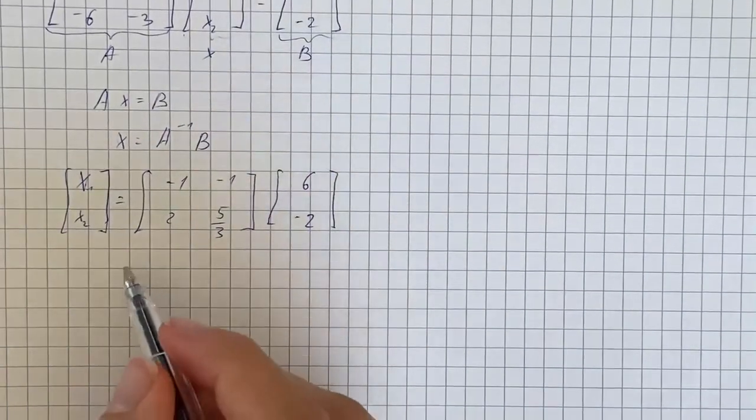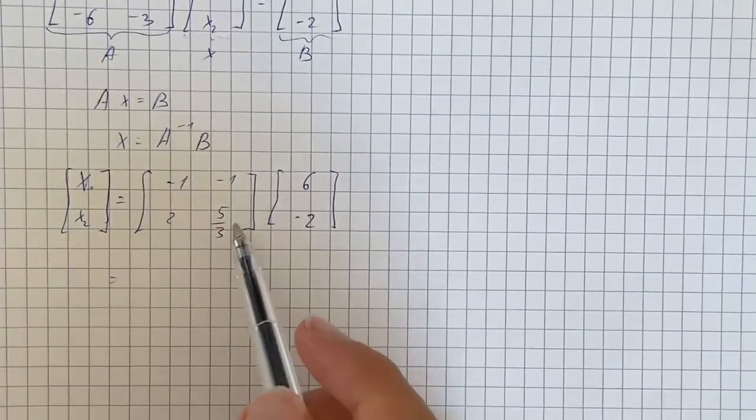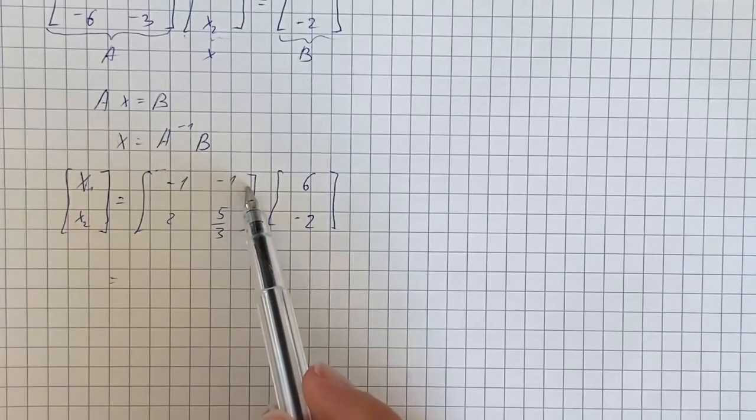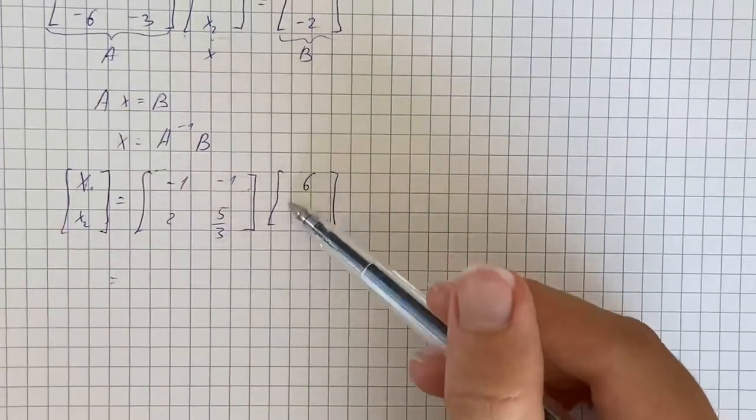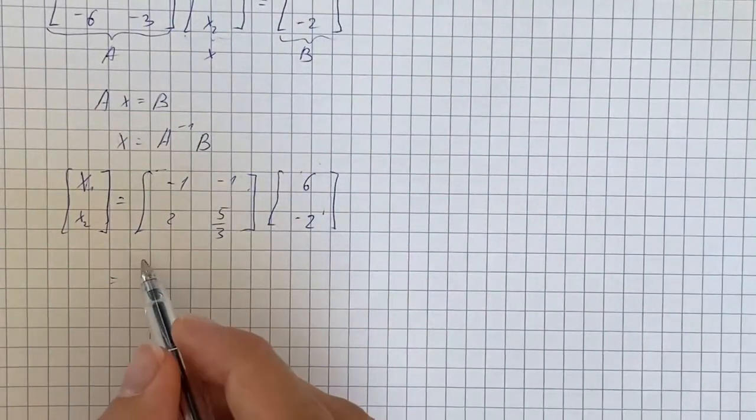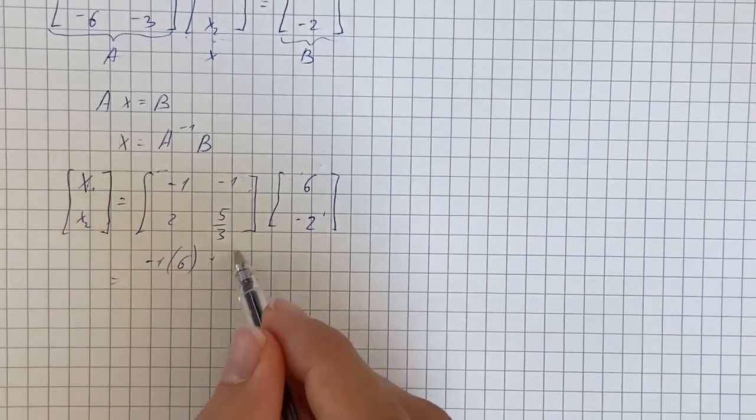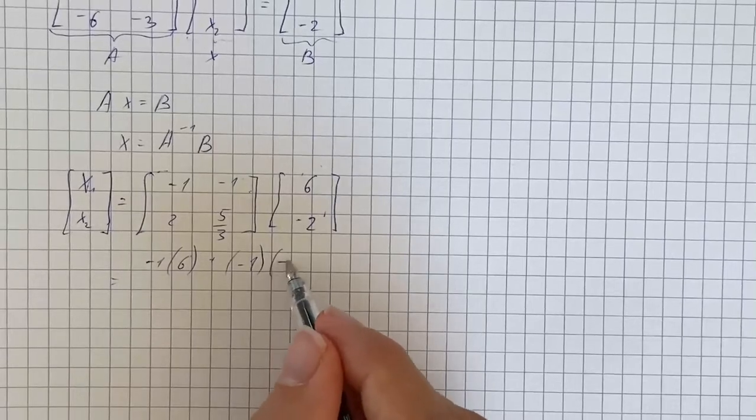For multiplication of two matrices we're going to take row information of the first matrix and column information of the second matrix. So it's going to be -1 times 6, plus -1 times -2.